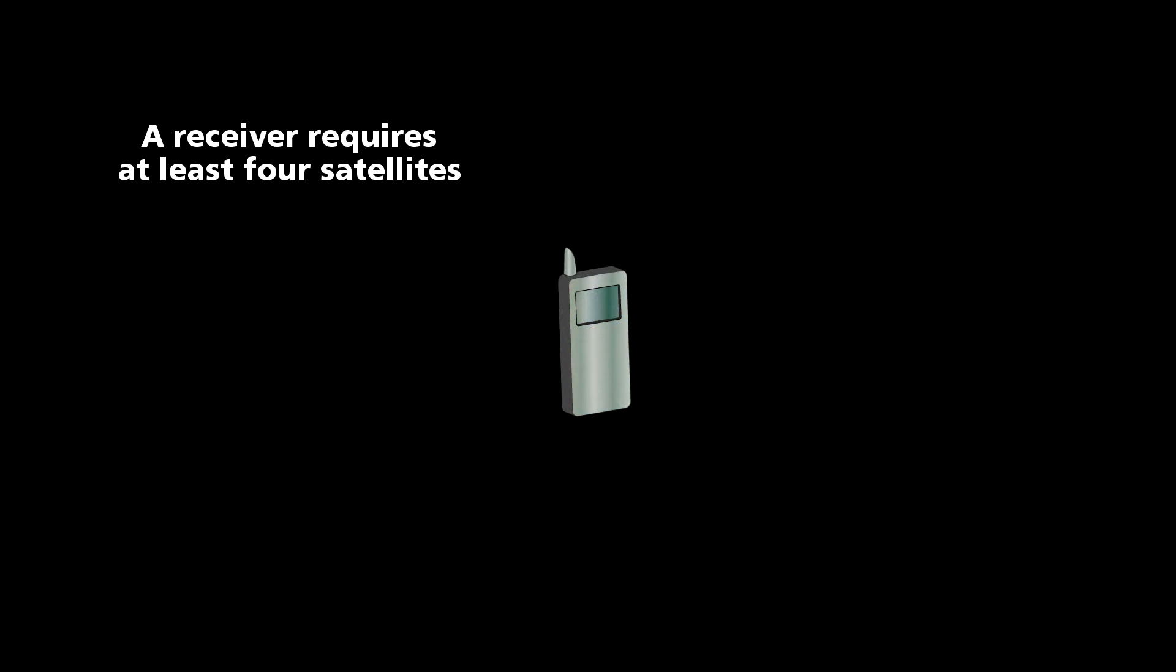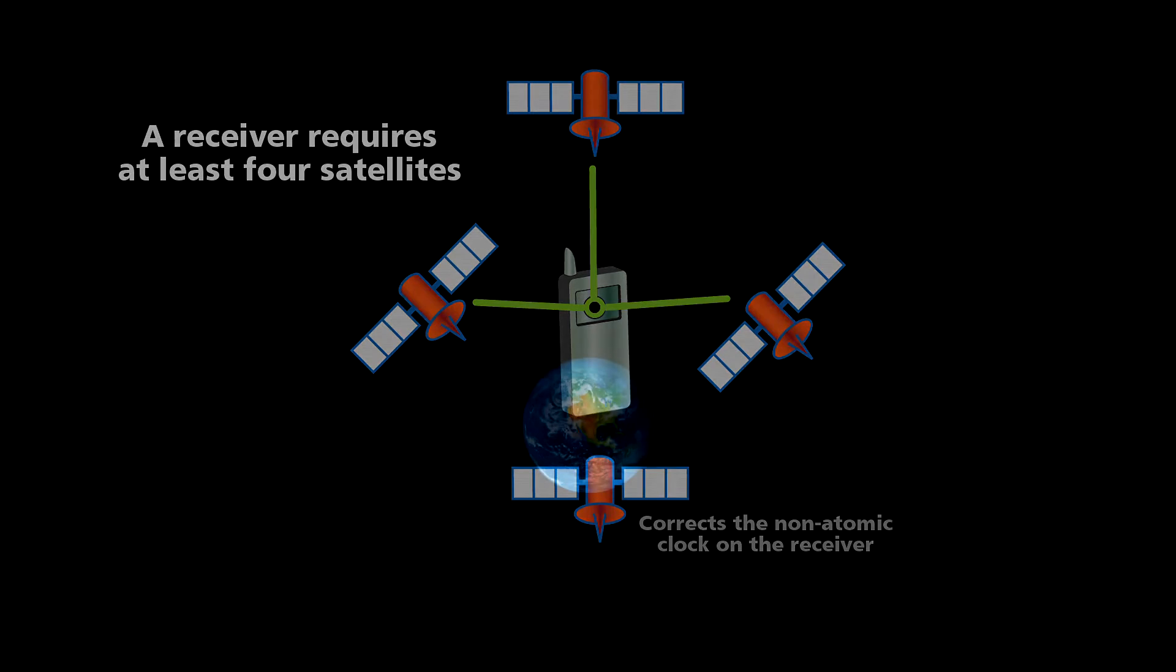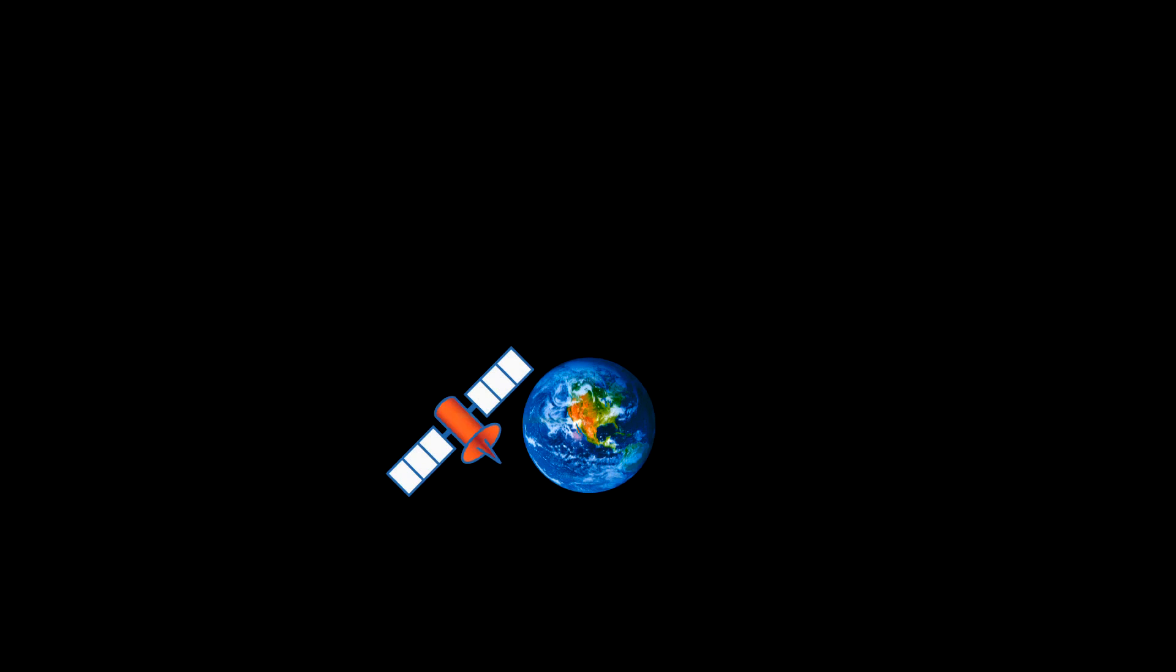A GPS receiver uses the position of four of these satellites to locate itself, one to correct the time on the receiver and three to locate its position. Here's how it works. A signal is sent to the receiver from the first satellite that contains that satellite's location and the signal's time of departure. The receiver then multiplies the signal's travel time by the speed of light to calculate its distance from the satellite.